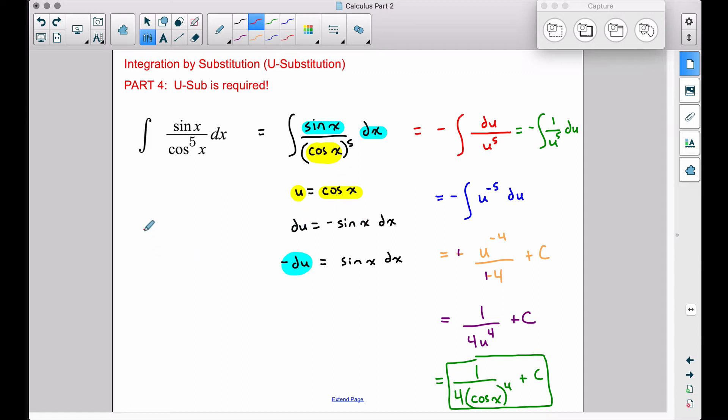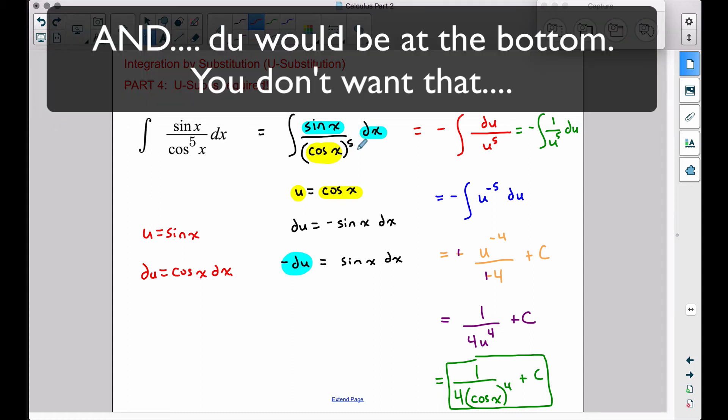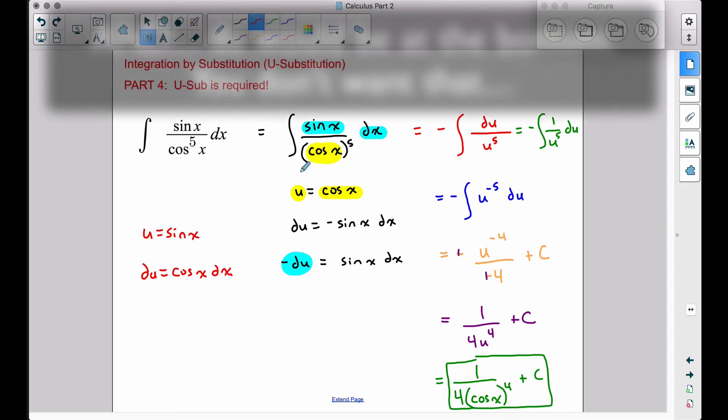This would be incorrect. If you let U be equal to sine of X, which is going to be the top part, DU would be cosine of X DX. But that's going to be a problem because that cosine of X that we have here is stuck inside of an exponent, and you don't want to do that. So there is a correct way and an incorrect way of dealing with sines and cosines when you're applying U substitution to a problem.